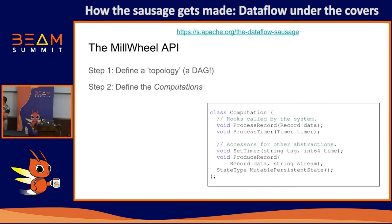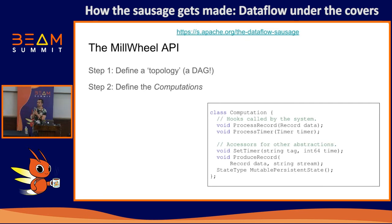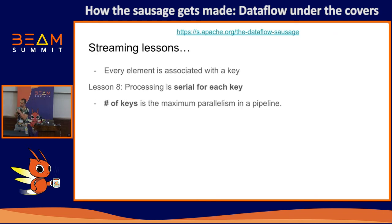MillWheel looked like this: you'd define a topology with operations, override a C++ class, and define process_record (like process in Beam), process_timer (like on_timer_fire), plus accessors for setting timers and outputting records to a stream. MillWheel was fairly popular inside Google. The team worked with specific teams to improve the system and refine watermark semantics over time.